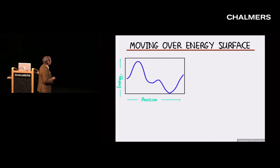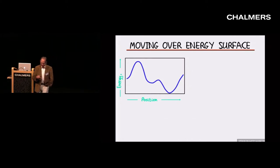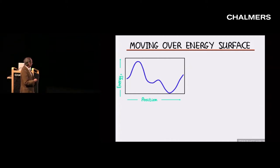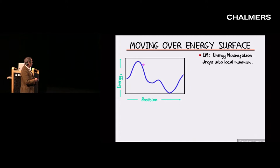One of the nice things about physics is if you have one thing, you can often get a whole lot more. We had the energy function. With an energy function, a bit like a roller coaster, we can calculate many things. We can do minimization, which uses forces to go downhill.